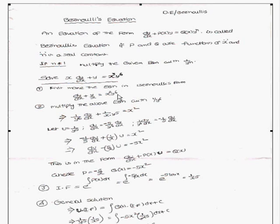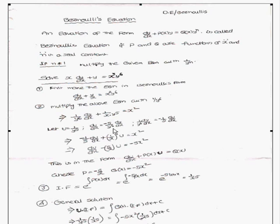Therefore, multiply the equation by 1/y⁶. You will get (1/y⁶)·(dy/dx) + (1/x)·(1/y⁵) = x². Now let u = 1/y⁵, so du/dx = −5/y⁶·(dy/dx), which means 1/y⁶·(dy/dx) = −(1/5)·(du/dx).